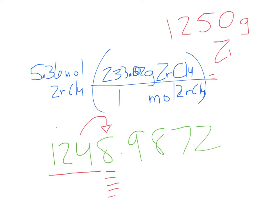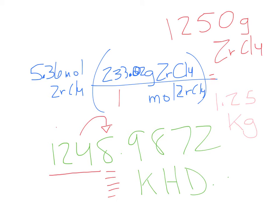And that is 1250 grams of ZrCl₄. Is there a different way we can write that answer to make it a little easier? 1.25 kilograms. All I did was move the decimal three places to the left. King Henry — one, two, three — 1.25 kg. You wouldn't say you're 1.9 million grams, would you? That doesn't make sense.